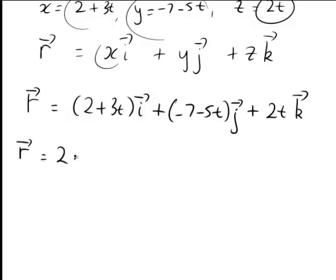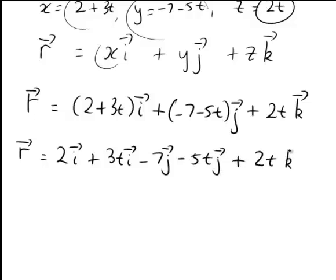If we expand that, we get 2i plus 3ti minus 7j minus 5tj plus 2tk.